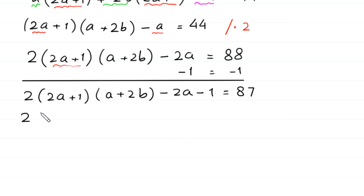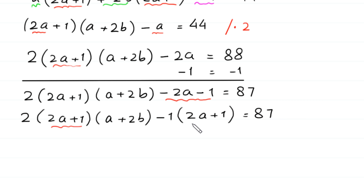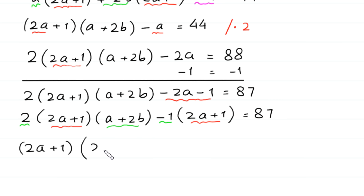Next, from the terms negative 2a minus 1, we can factor out negative 1: minus 1 times 2a plus 1. So 2a plus 1 is a common factor. We factor out 2a plus 1 from both parts: 2a plus 1 times 2 times a plus 2b, minus 1, minus 1 is equal to 87.